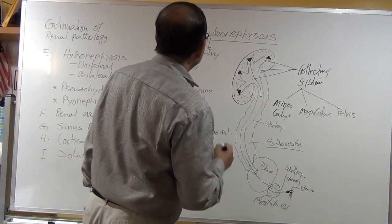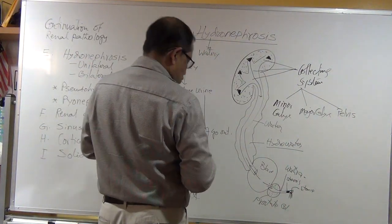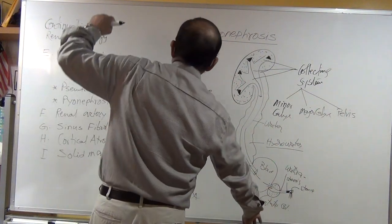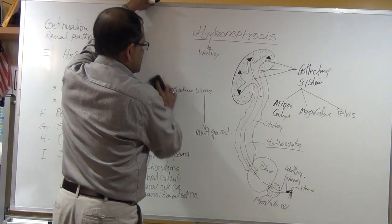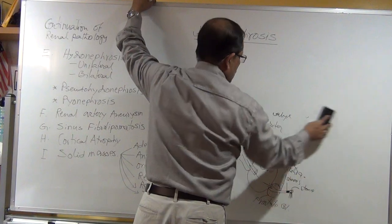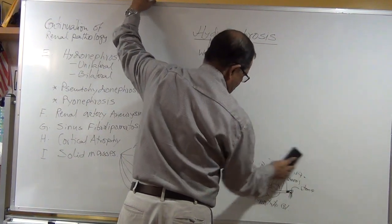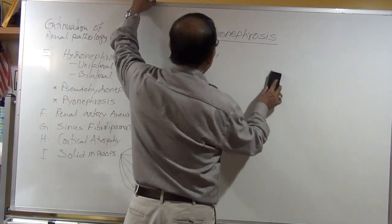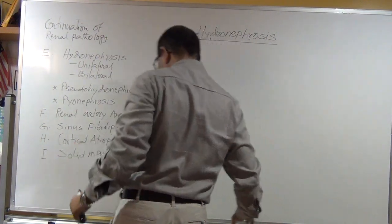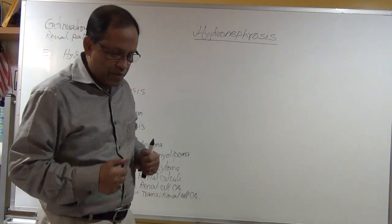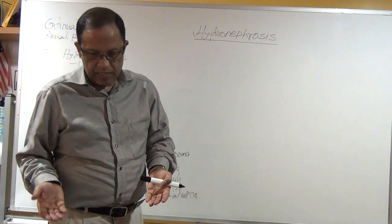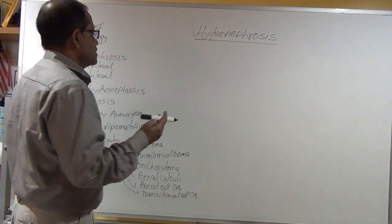This is the introduction to how hydronephrosis happens. We will now discuss unilateral versus bilateral hydronephrosis, and the causes in each — including causes before birth, after birth, and in adults and older people.